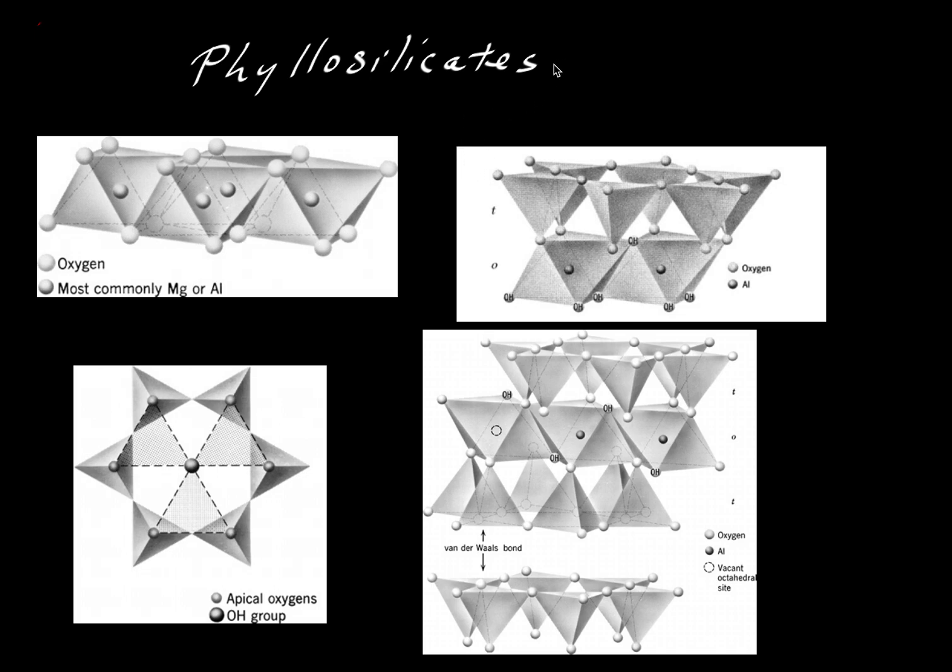So here we're going to take a brief look at the structures that comprise the phyllosilicates. These are the silicates that are made of sheets or layers. The first thing we're going to look at is this so-called octahedral sheet. It's a very important building block for the phyllosilicates.